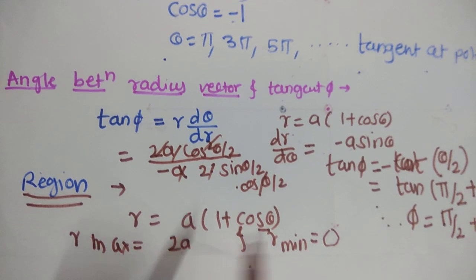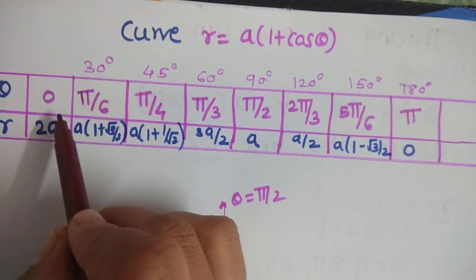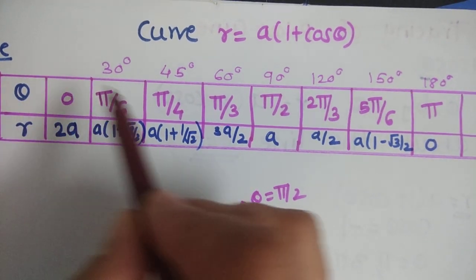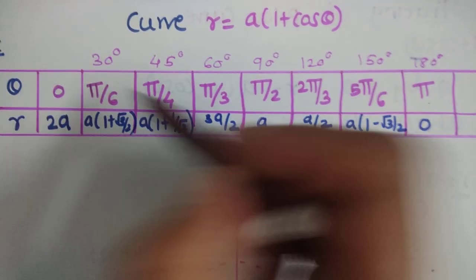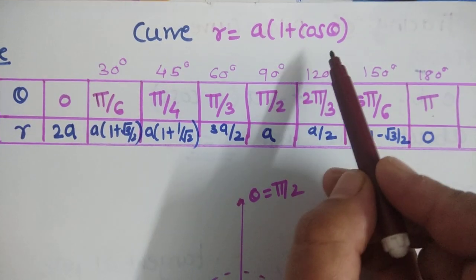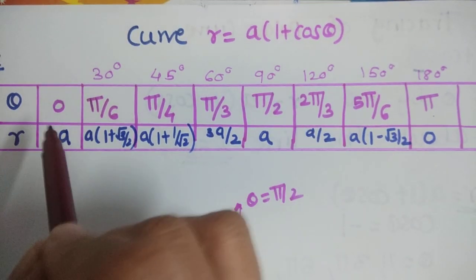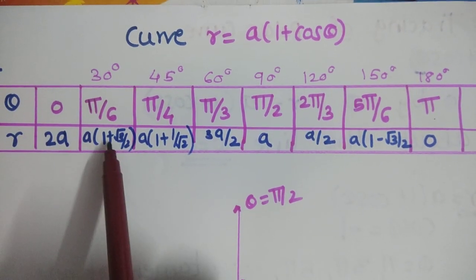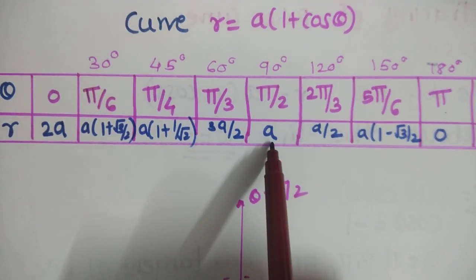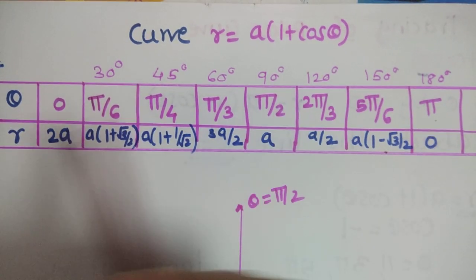Now let us trace the curve using a table. We take values θ = 0, π/6, π/4, π/3, π/2, 2π/3, 5π/6, and π. At θ = 0, r = 2a (maximum). As θ increases, r decreases: at θ = π/3, r = 3a/2; at θ = π/2, r = a; and at θ = π, r = 0.